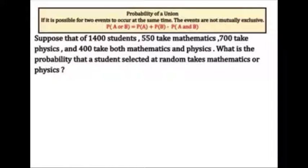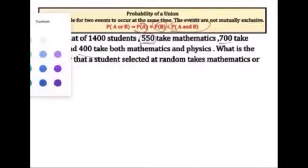Inclusive events, which means that they are not mutually exclusive, so they can happen at the same time. Suppose that of 1400 students, 550 take mathematics, 700 take physics, and 400 take both mathematics and physics. What is the probability that a student selected at random takes mathematics or physics? 550 take mathematics, so we're going to write here...